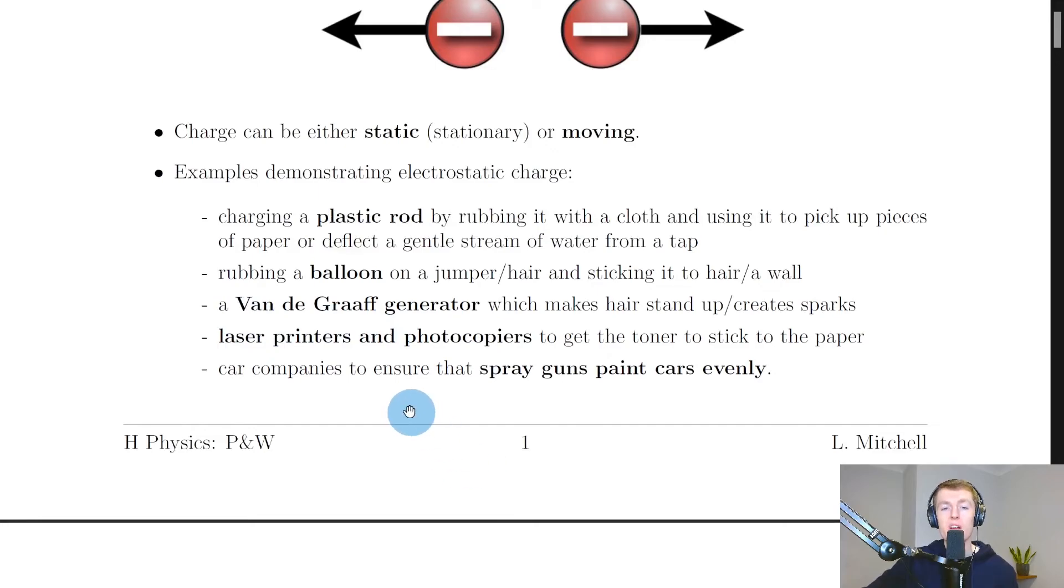Going back to the notes, another example demonstrating electrostatic charge would be a Van de Graaff generator, which can make your hair stand up and also create sparks to show you how lightning works. We've also got laser printers and photocopiers where electrostatic charges are used to get the toner to stick to the paper. Lastly, car manufacturers and garages make use of electrostatic charge to ensure that spray guns paint cars evenly and that paint actually sticks to the metal surface of a car.